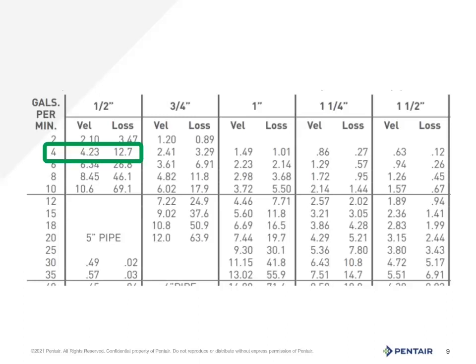But you will also notice the friction loss differs by more than what can be accounted for by the decimal point or rounding. So what accounts for this difference? In reading the chart, I found that it was actually based on a C factor of 150 versus a C factor of 140 in the earlier chart. So to answer that question — yes, the smoothness can affect how the chart will read the friction loss.